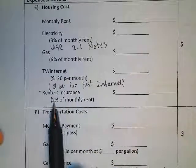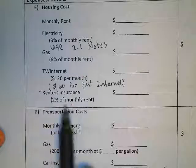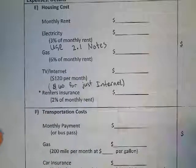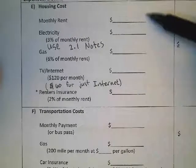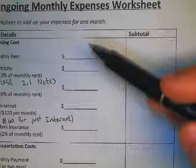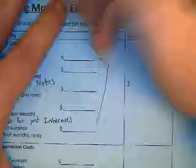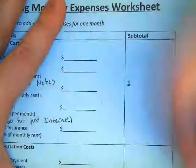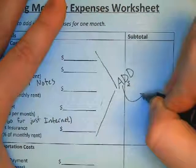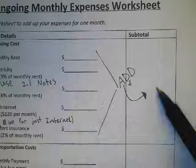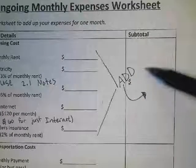Since renter's insurance says percent of something, use your 2.1 notes to figure out how to find that value. Once you finish this box, you'll have all five values. To find a subtotal, add up all the values in one area — add up all these values and that number goes right here. That gives you a subtotal of what your housing is going to cost you.